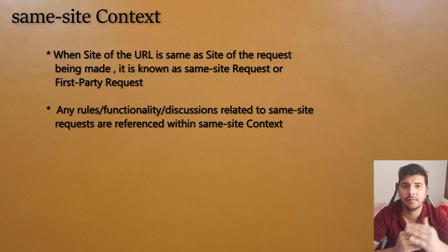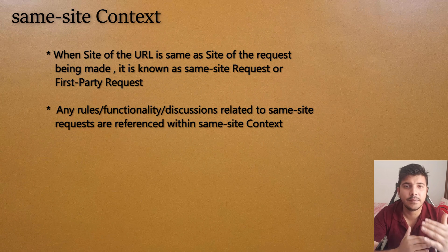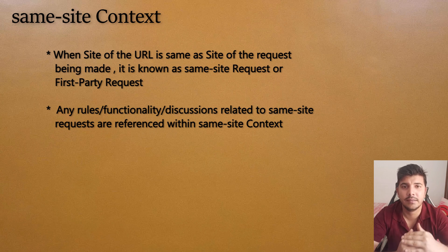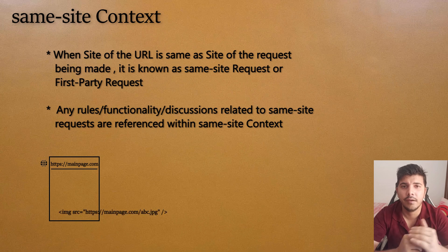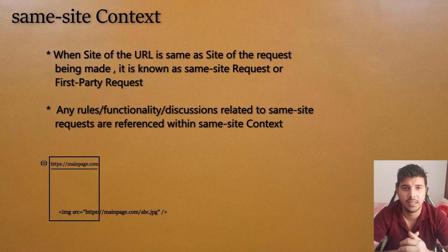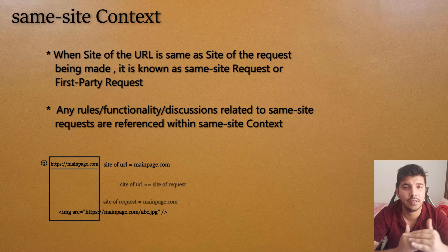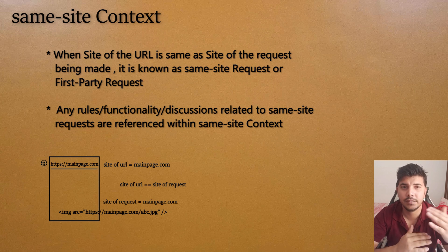Whatever we have discussed so far was referenced with the same-site context. Same-site context means that the site of the URL which we are visiting is the same as the site of the request we are making. For example, if you are in a browser and you have opened mainpage.com, and within your page another request is going for abc.jpg, the site of the URL and the site of the request is the same — mainpage.com. These types of requests are known as first-party requests or same-site requests.